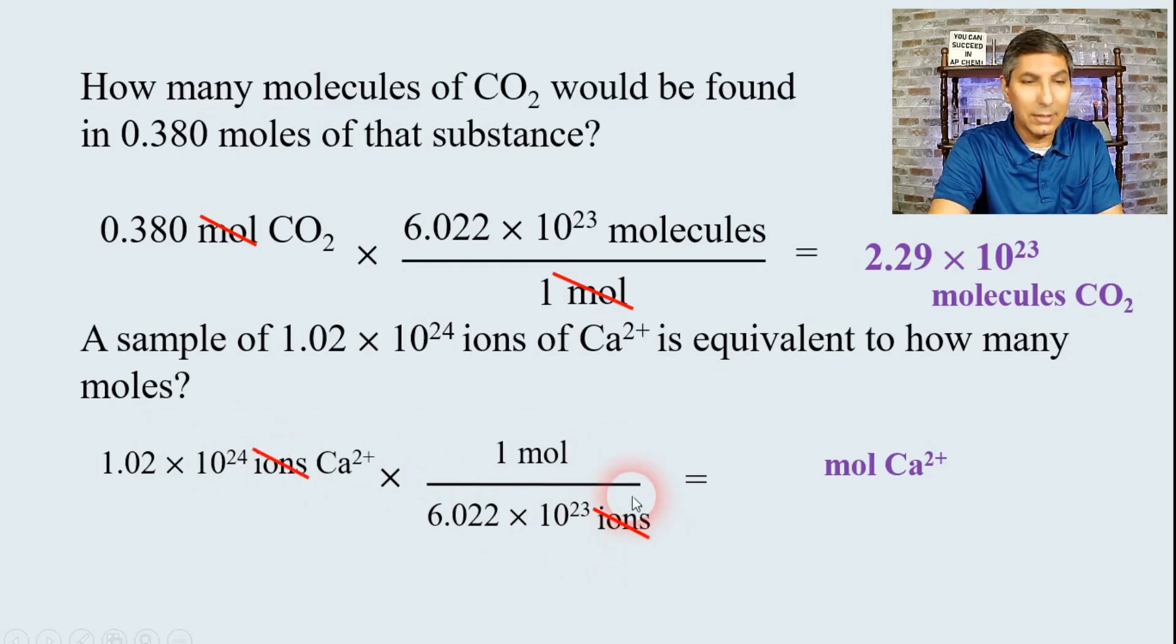So now we can just cancel ions, top and bottom, and we can divide this time. We take 1.02 times 10 to the 24th, and we divide that by 6.022 times 10 to the 23rd. And we get an answer of about 1.69 moles of Ca2+. So we can calculate those fairly simply, as you can see here.